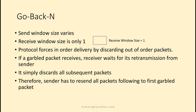In Go-Back-N, the send window size varies; its maximum size depends on the number of bits used to represent the sequence number field. The receive window size will always be one. Because of this size, the receiver can force ordered delivery of packets. If a garbled packet is received, the receiver waits for its retransmission and simply discards all subsequent packets. Therefore, the sender has to resend all packets sent after the corrupted packet — that is why the protocol is named Go-Back-N.